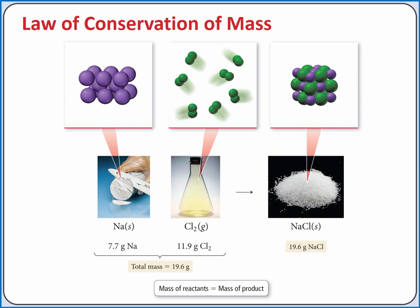We can apply the law of conservation of mass to the reaction between sodium metal and chlorine gas. If exactly 7.7 grams of sodium metal reacts with 11.9 grams of chlorine gas to produce sodium chloride, or table salt, then according to the conservation of mass, exactly 19.6 grams of sodium chloride would be produced. That is, the sum of the masses of the reactants equals the sum of the masses of the products.